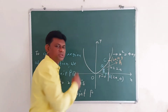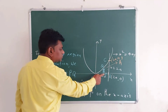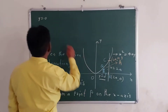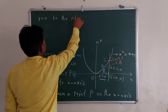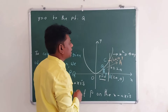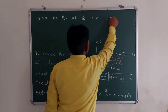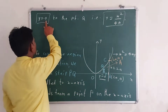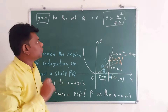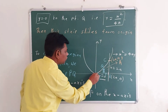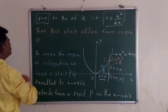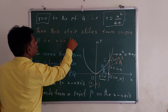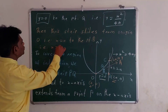To cover the region of integration, we draw a strip PQ parallel to the Y axis. It extends from point P on the X axis, that is Y = 0, to point Q on the parabola X² = 4AY, that is Y = X² / 4A. This strip slides from the origin O, where X = 0, to the point B, where X = 2A.